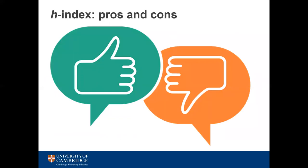The pros of the H-Index are that it's easy to use and visualise — it gauges the career progression of an author and demonstrates their productivity over time. On the other hand, the H-Index is biased towards more experienced and productive researchers, which disadvantages early career researchers who are not yet so established. It could also be seen more as an indicator of quantity rather than quality of a researcher's outputs.